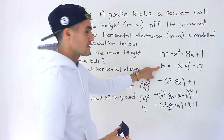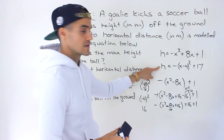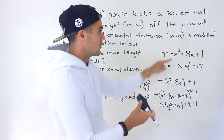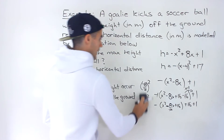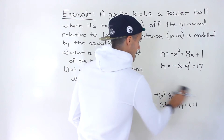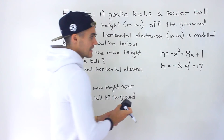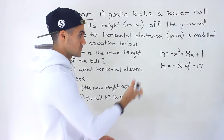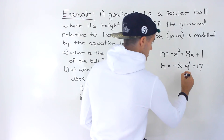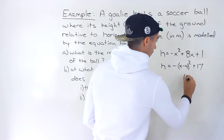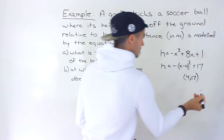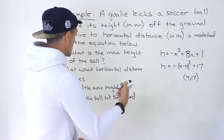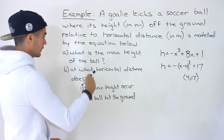This vertex form and the original expression are exactly the same thing — if we expand the vertex form, we'd get back to the original quadratic. What's nice now is that because it's in vertex form, it's really easy to see what the vertex is: it's just going to be 4 and 17.